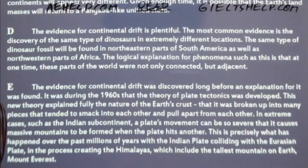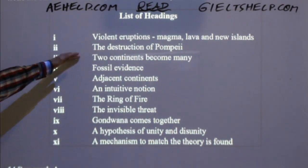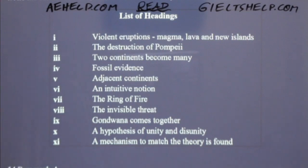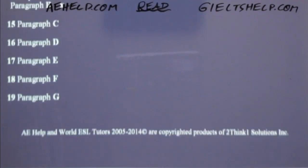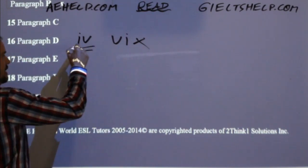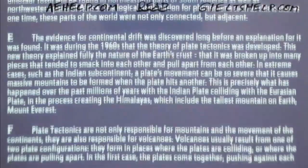The closest match is Roman numeral IV — 'Fossil Evidence.' In your answer sheet, make sure you write IV correctly — it's five minus one — not VI. Have the correct order of Roman numerals, and let's go to paragraph E.